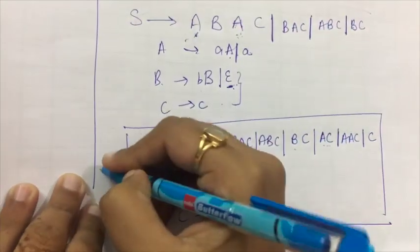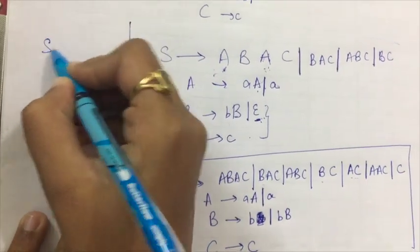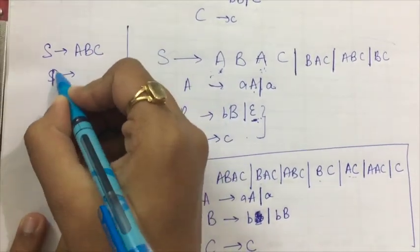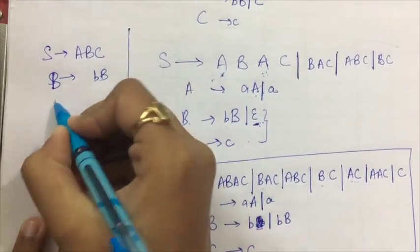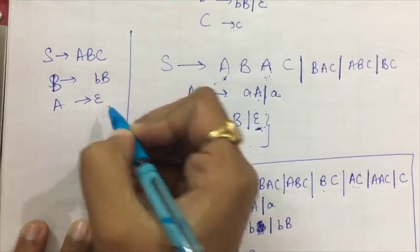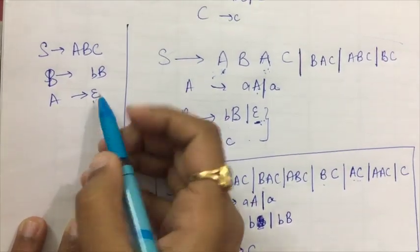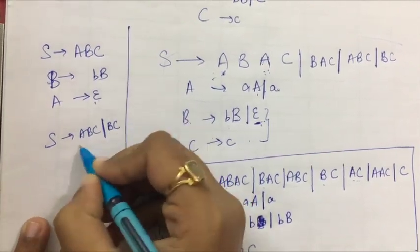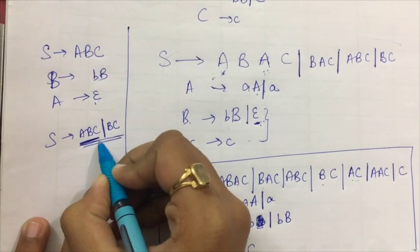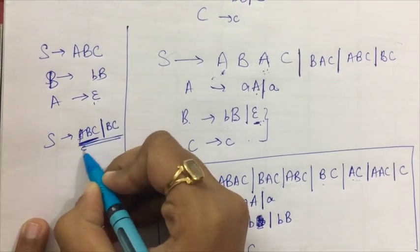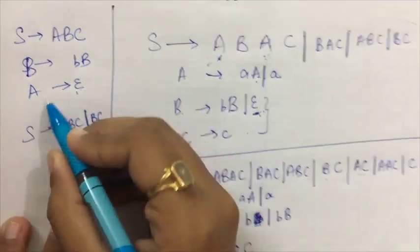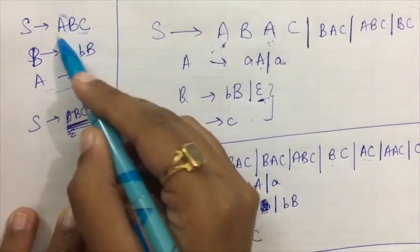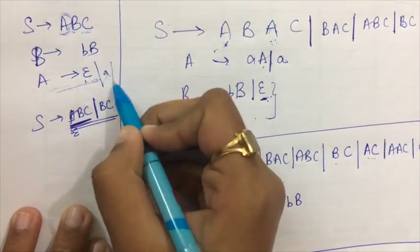Suppose we have a question where the production rules are: S gives me ABC, B gives me BB, and A gives me null. So now I do not need to write S gives me ABC or BC, because I know that this is never going to be used. This is definitely going to go to null, because A has no other value. A does not have any other value, so S will always point to BC.